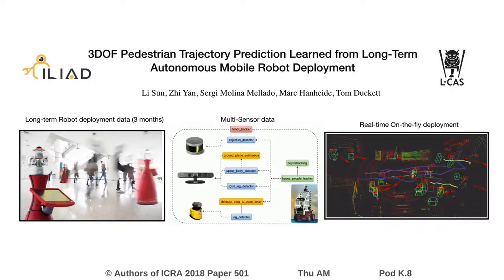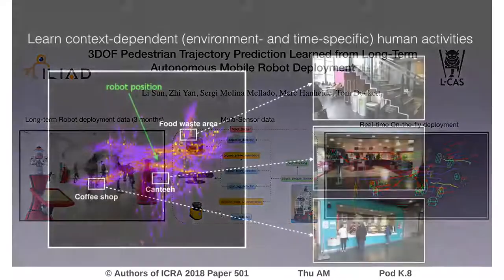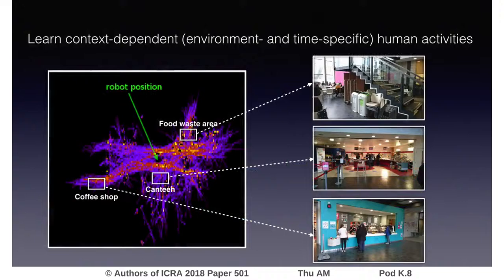This paper presents a novel 3-degree-of-freedom pedestrian trajectory prediction approach for autonomous mobile robots. In real life, most human activities are environment and time-specific. We aim to learn context-dependent human activities from long-term robot deployment data.